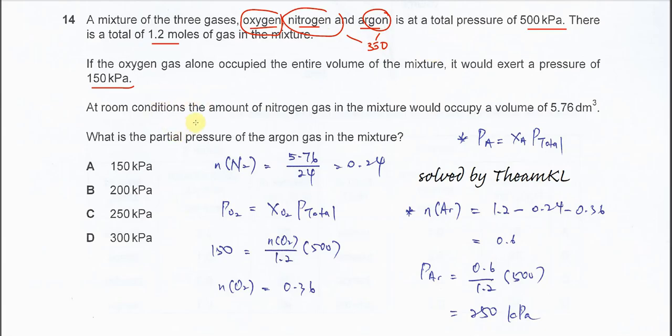At room conditions, the amount of nitrogen gas in the mixture would occupy a volume of 5.76 dm³. What is the partial pressure of argon gas in the mixture?